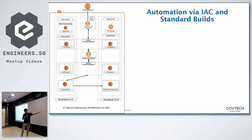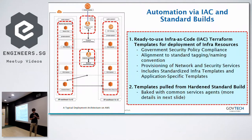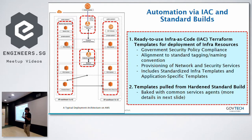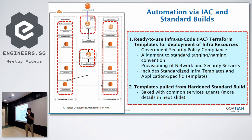This is a typical deployment architecture. I use AWS — this is just an example of a typical reference architecture. We came up with standardized reference architectures, and all the security and government compliance requirements are configured as part and parcel of a standard template. We also build hardened standard images, pre-baked with common plug-ins and agents that we need — all the agents will be there.